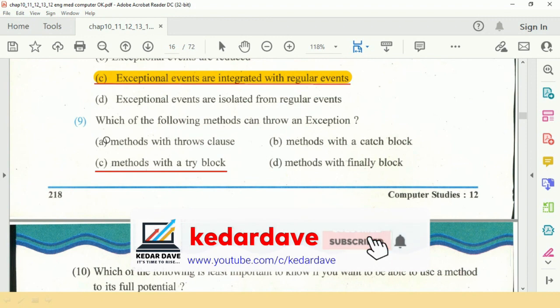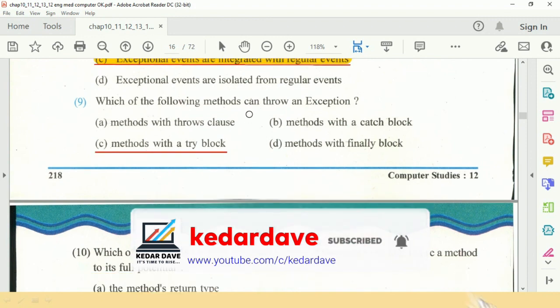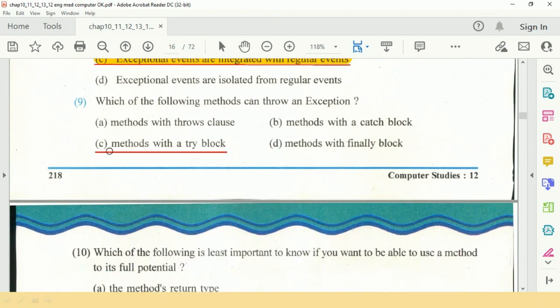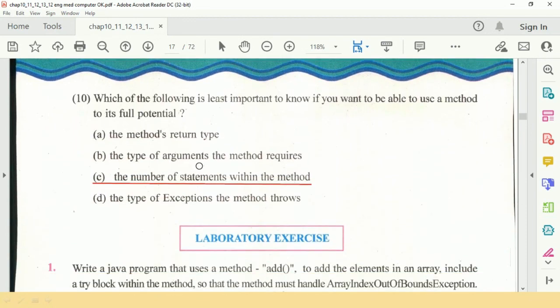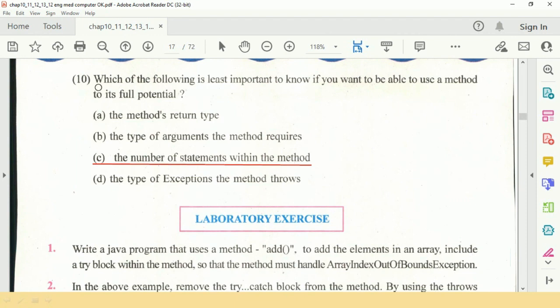Question nine: which of the following methods can throw exceptions? Answer: C, methods with the try block. Question ten: which of the following is least important to know if you want to be able to use a method to its full potential? Answer: the number of statements within the method block.